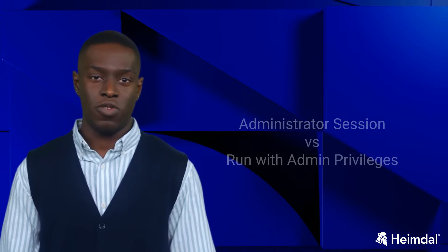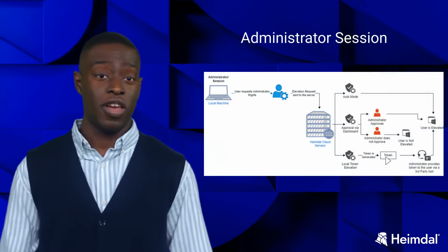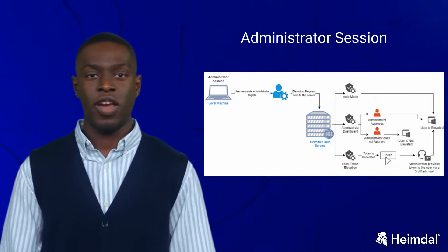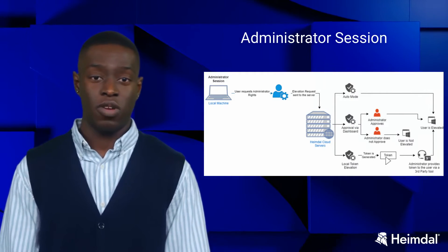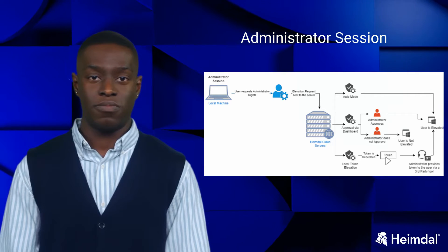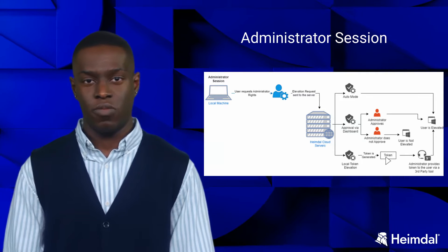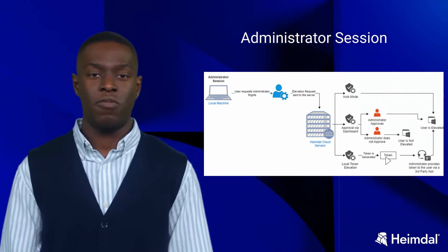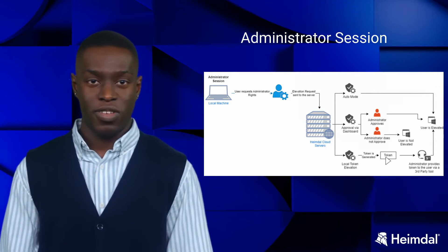Let's speak first about the difference between Administrator Session and Run with Admin Privileges. Administrator Session allows the user to elevate his account to Administrator, and that happens by temporarily promoting the user as a member of the local Administrator's group. An elevation is granted in a five-minute interval after being approved by the Heimble Dashboard Administrator, or in less than a minute if real-time communication is enabled on the group policy that is applying to the endpoint.